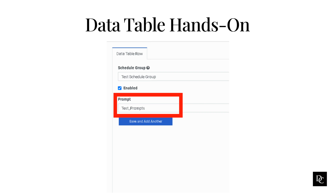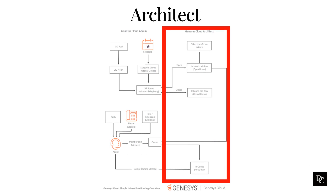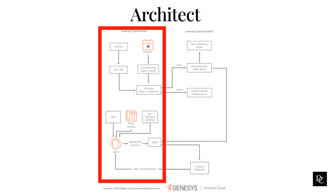Next, let's start with the call data action. Architect helps administrators and flow authors build call flows that answer a call automatically, present the caller with menu choices, and then route the call according to the caller's choice. The options presented to your customers might change based on changes to your business — whether it is a new order, a question, or an issue. Routing through Architect allows callers to determine their needs by choosing among options. Through the first 13 modules, we covered the Genesys Cloud Admin section, including Prompt Management in Module 6 and Schedule Management in Module 7.